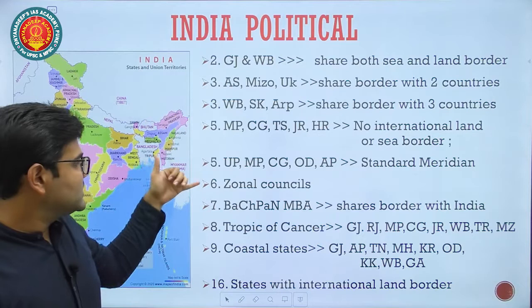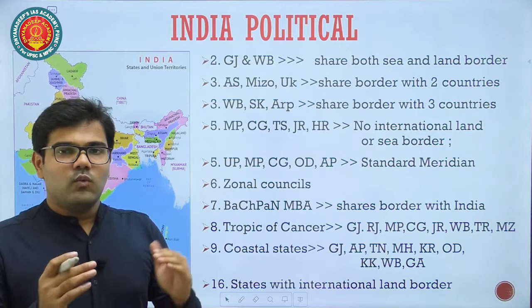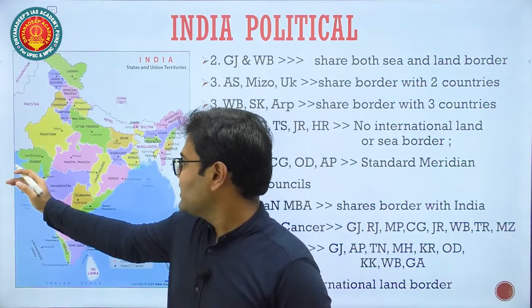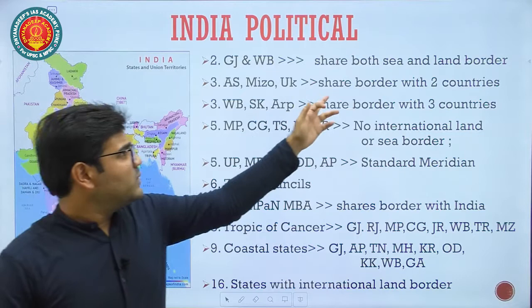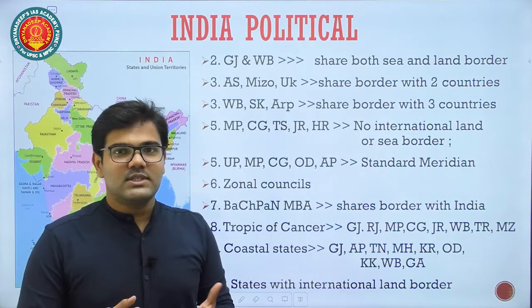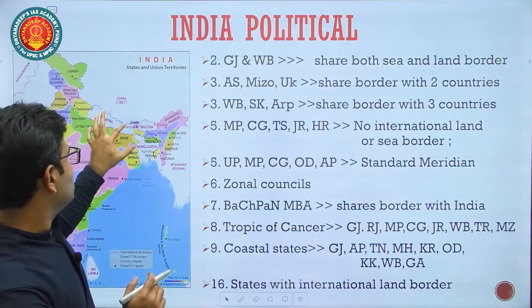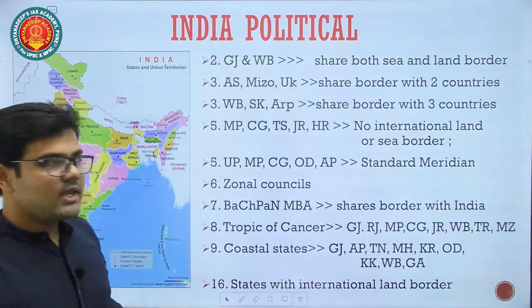There are 2 states in India — Gujarat and West Bengal — which share both an international land border and a sea border. West Bengal shares an international land border as well as a sea border; Gujarat shares a land border with Pakistan and a sea border with the Arabian Sea. There are 3 states — Assam, Mizoram, and Uttarakhand — which share borders with 2 countries. Such factoids are very important because UPSC can give you these statements to verify as true or false. Studying with maps makes it much easier to remember.